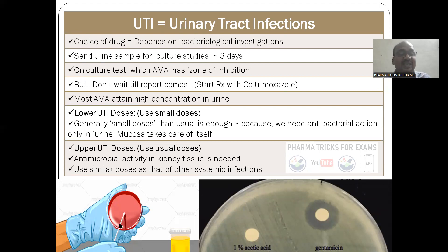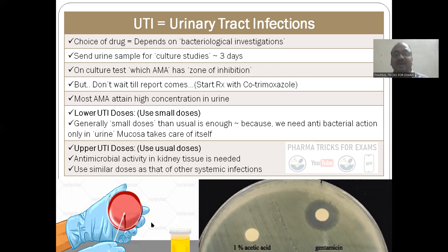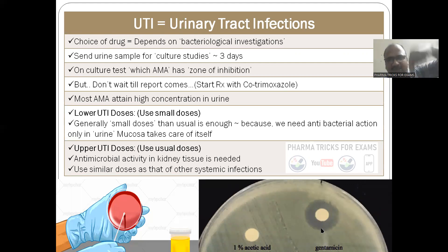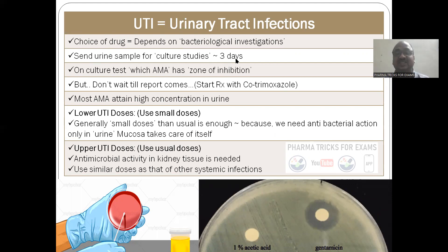Patient urine has to be collected and the organism grown — we don't know whether it is E. coli or a mixed infection. You grow it on media in a petri dish. Then you use antibiotic discs — paper discs immersed in gentamicin, nalidixic acid, and so on — place them on the petri plate and observe the zone of inhibition. Send urine sample for culture studies; it takes three days. You can start treatment before the result comes.